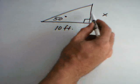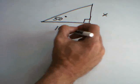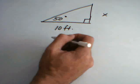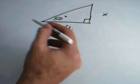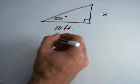In this example, x is opposite the 50 degree angle. 10 feet is adjacent to the 50 degree angle. The hypotenuse here is unmarked. Since we have opposite and adjacent, we're going to use tangent.